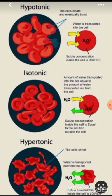Iso means same. In an isotonic solution, the solvent and solute quantity is the same inside the cell as well as in the surrounding. There is no net movement of water because the concentration is equal on both sides.